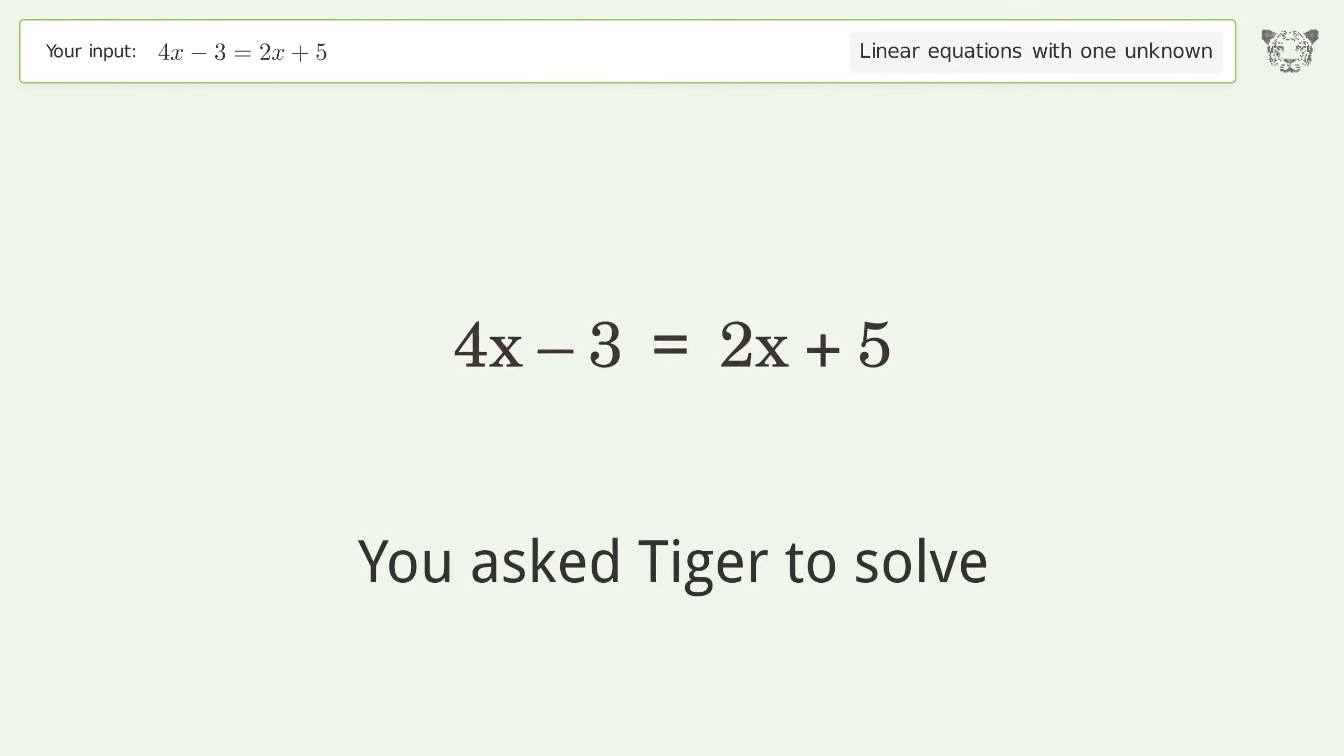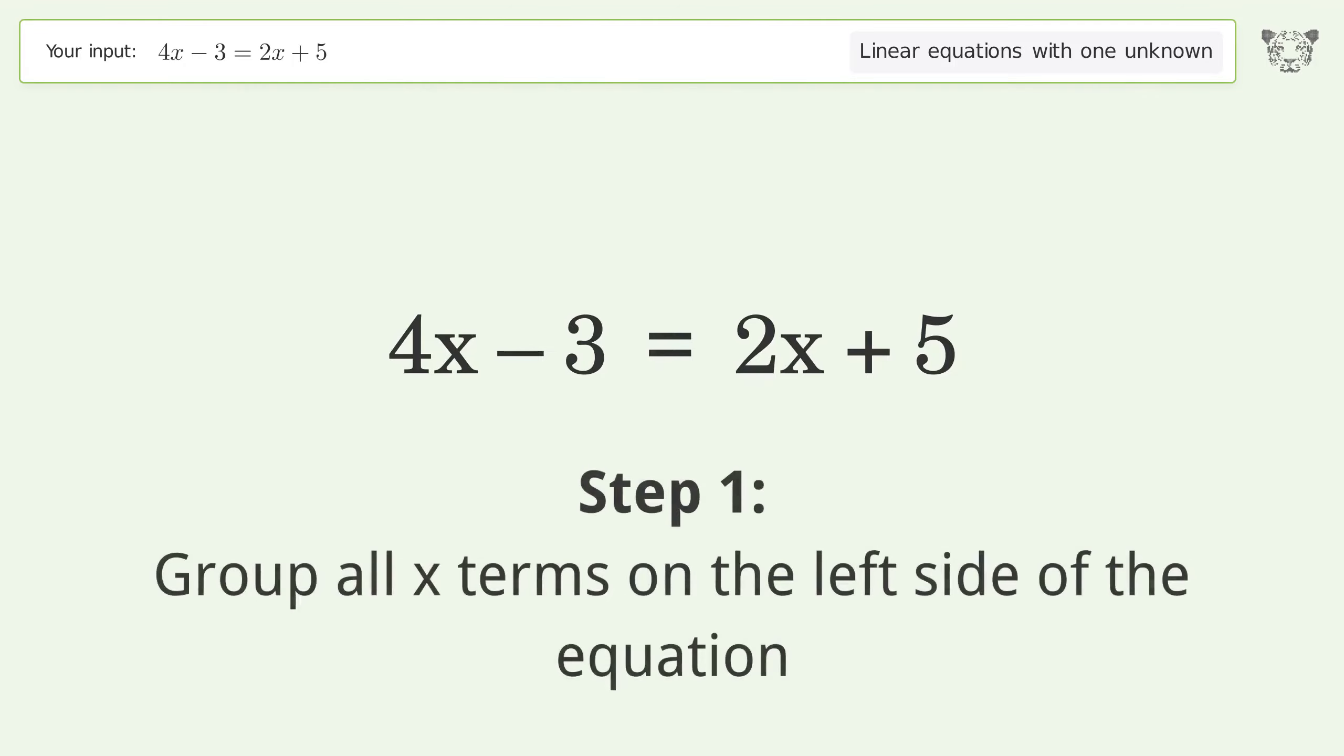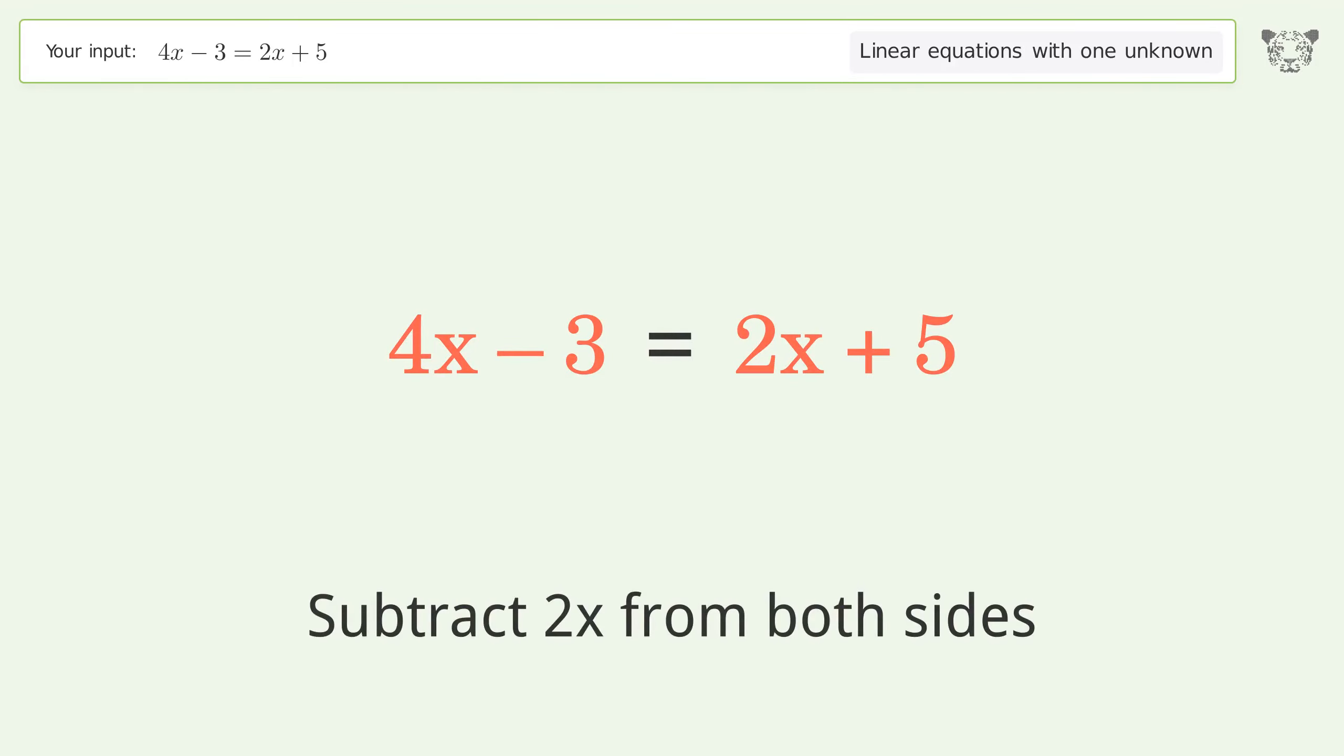You asked Tiger to solve this linear equation with one unknown. The final result is x equals 4. Let's solve it step by step. First, group all x terms on the left side of the equation by subtracting 2x from both sides.